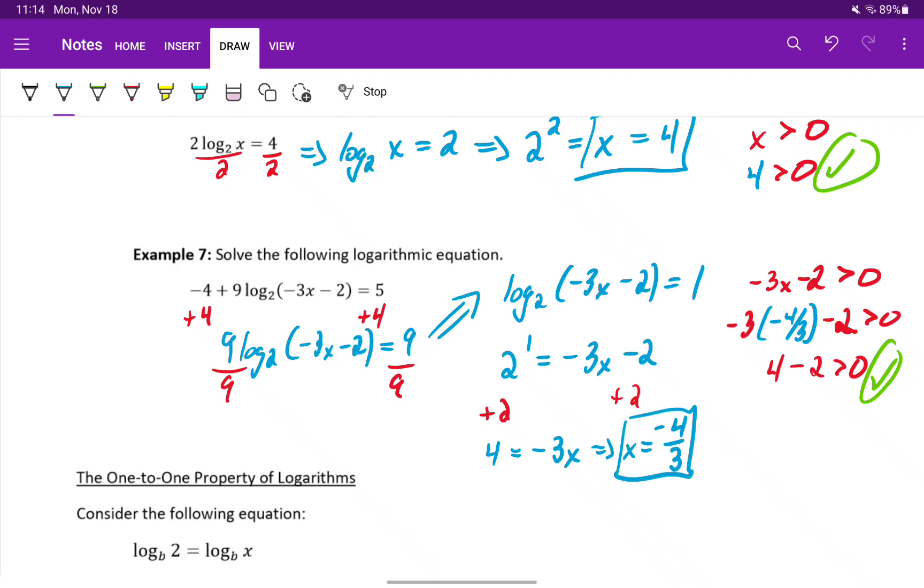So this solution checks out. When we plug x equals negative four thirds back into the original expression, we don't get anything outside the domain for that log function, so we have another valid solution in this case.